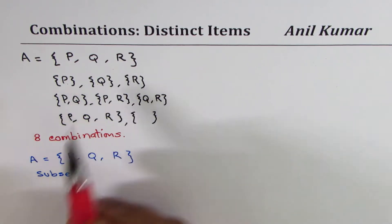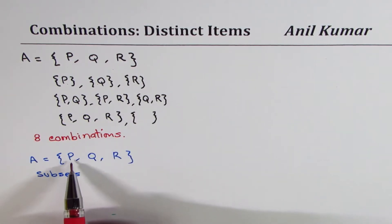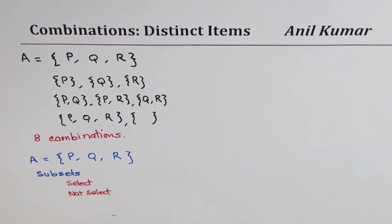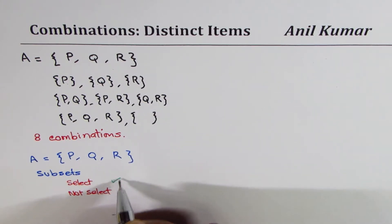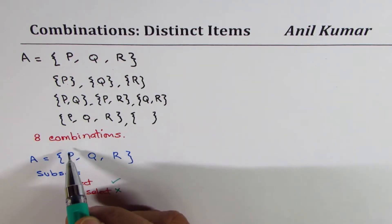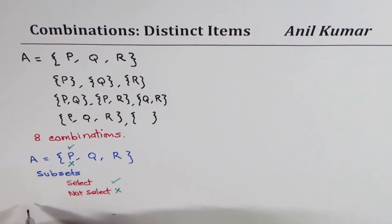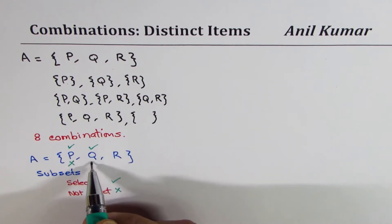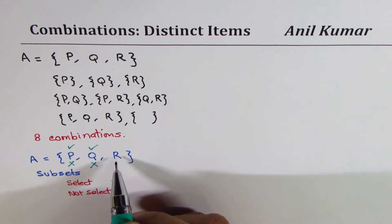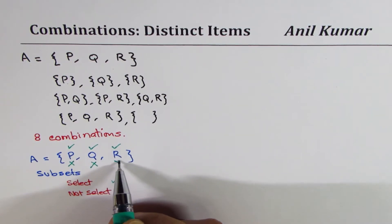The method is, let's talk about each element. So in our set, we have a choice. Should we select P or should we not select? So what choice we have? Should we select or not select? So for each element, we have this choice, select or not select. So if I write check mark for selection and cross for not select, then for P, I have a choice. I could select it or I may not select it. For Q, I may select it, I may not select it. For R, I may select it, I may not select it.